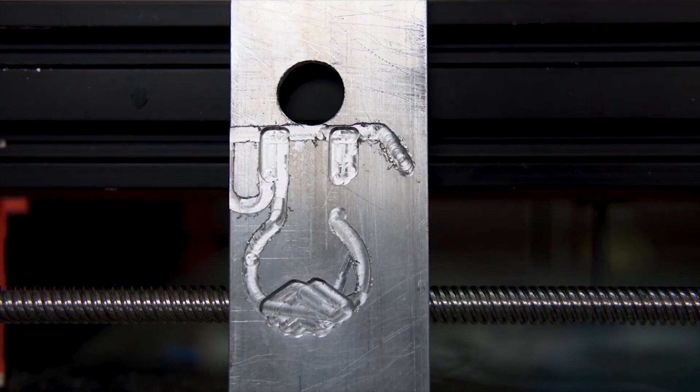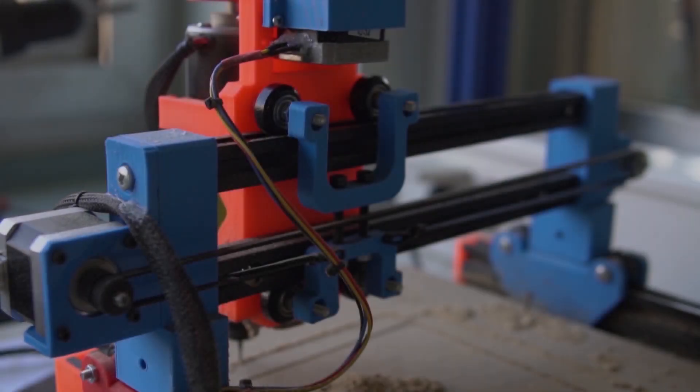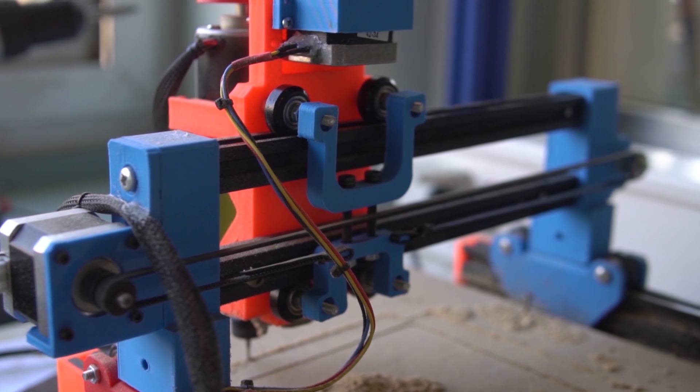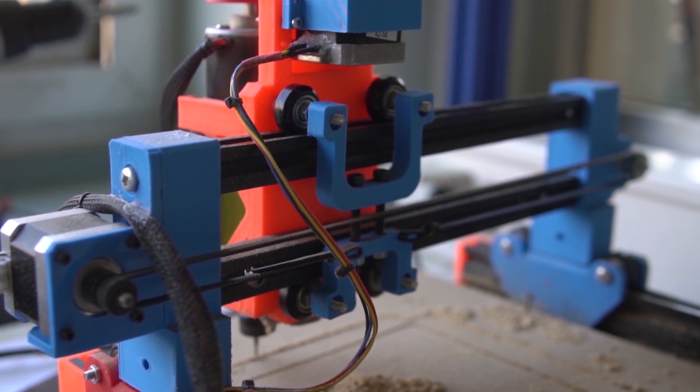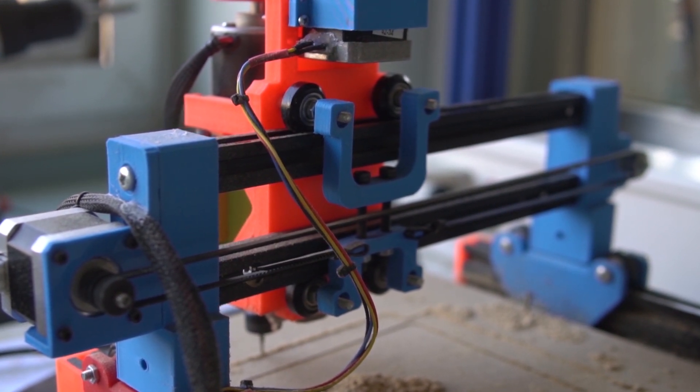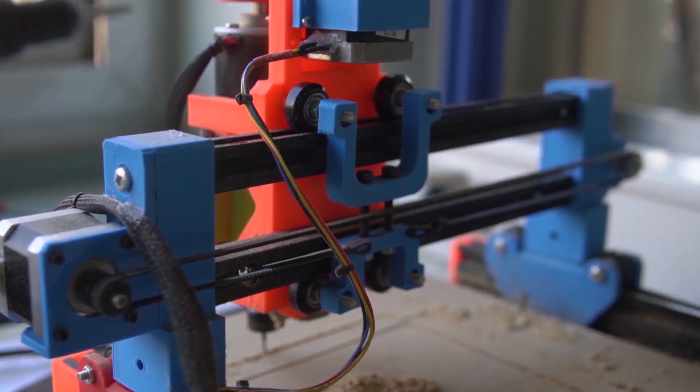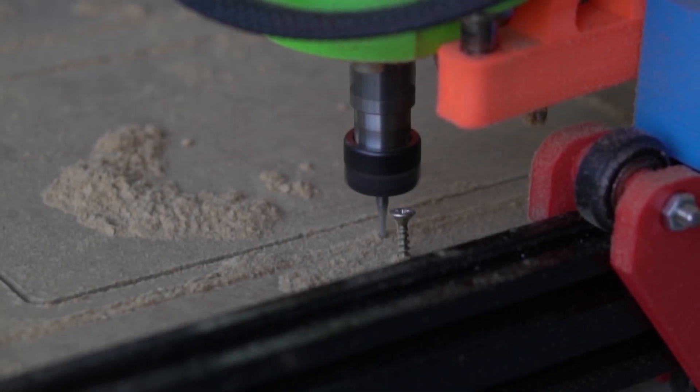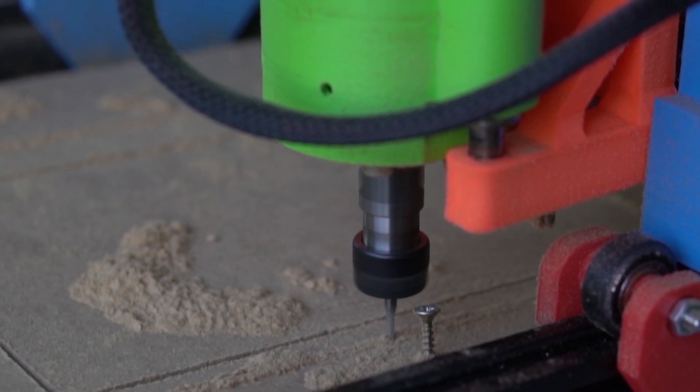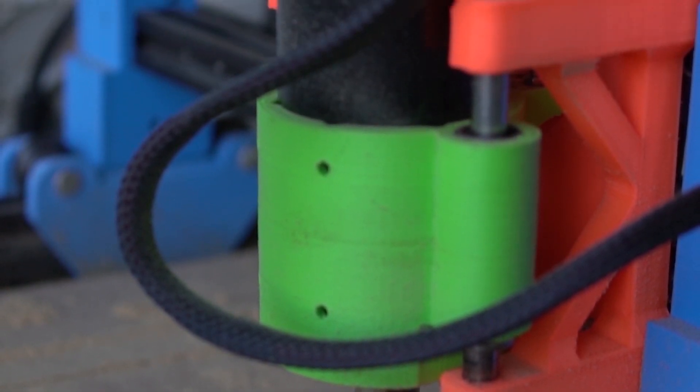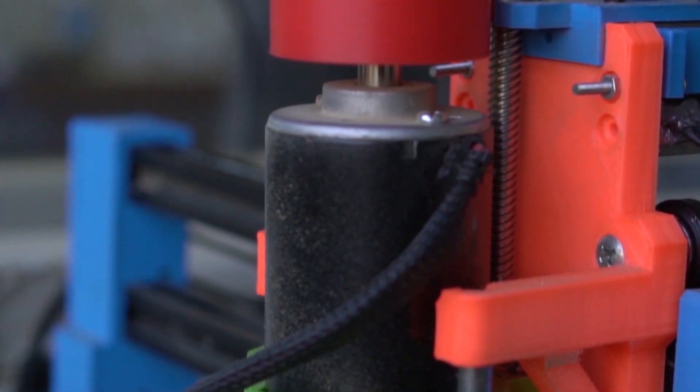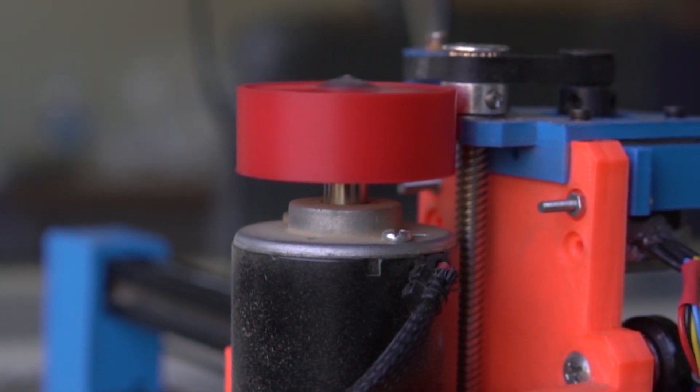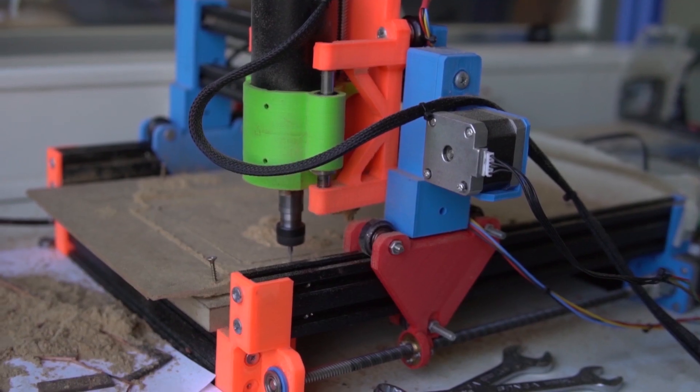So the first crucial update was to completely ditch the eccentric nuts as we couldn't get them to work properly. The second upgrade was to buy a proper spindle as the Dremel had insufficient torque, power, and it was too loud for us to work in the same workspace.